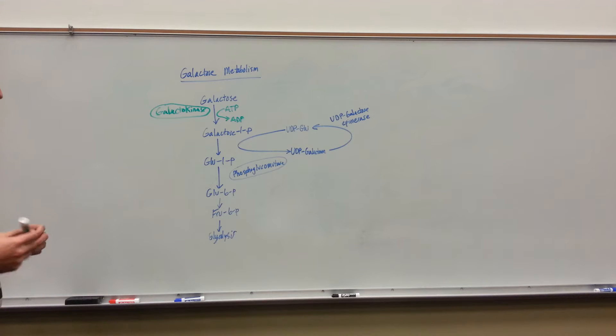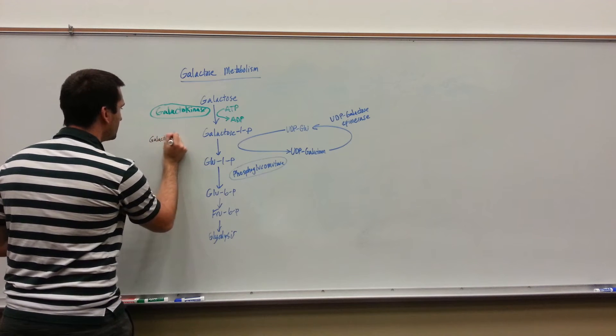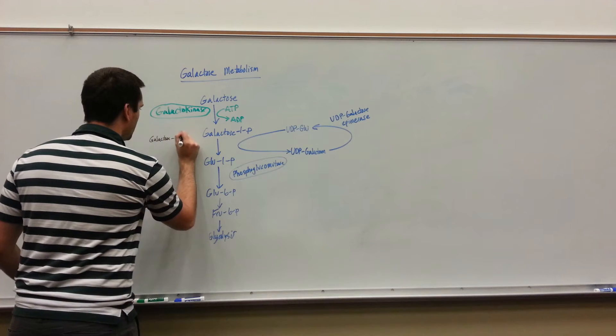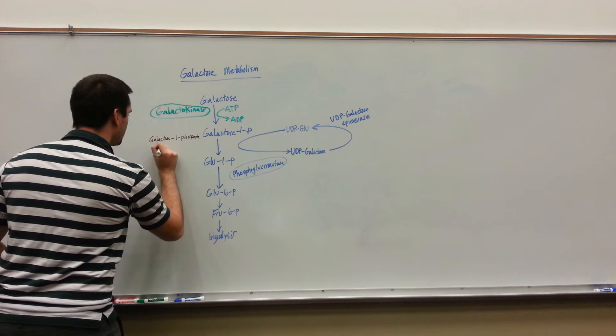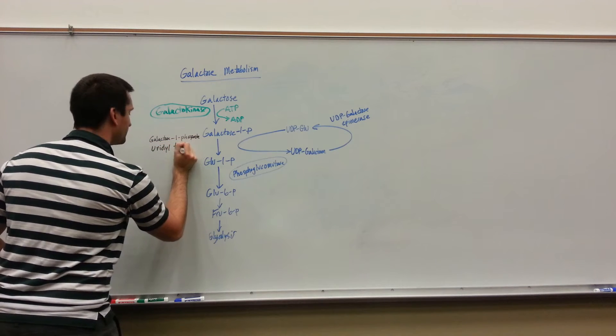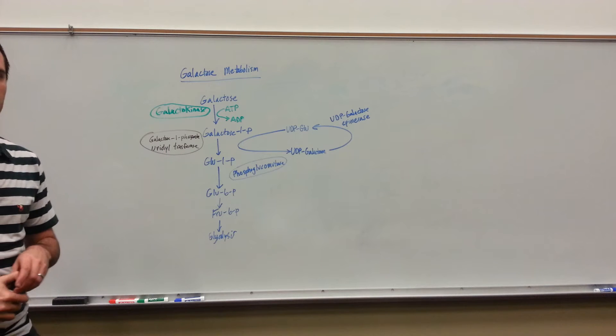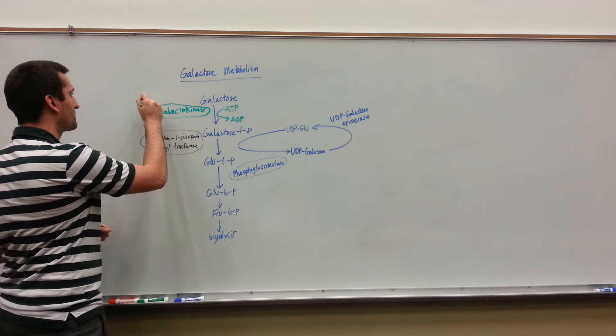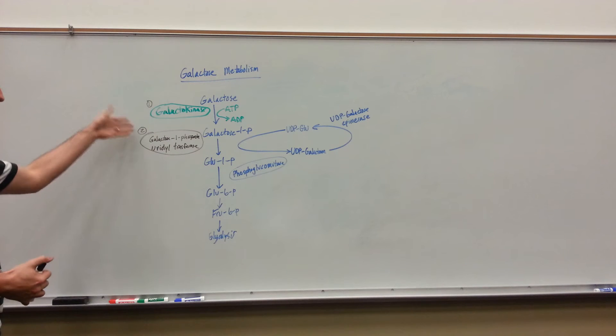The next enzyme is going to be an important one. It'll be galactose 1-phosphate uridyl transferase. This is going to be our second enzyme of note. I'm putting a number 1 here and a number 2 here because we'll come back to a discussion about what actually happens when you have a deficiency in these.